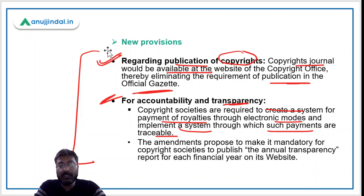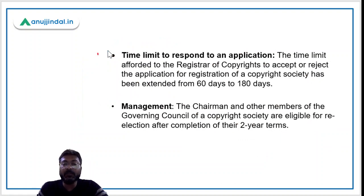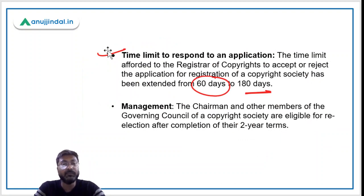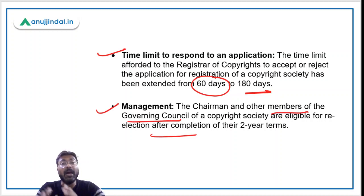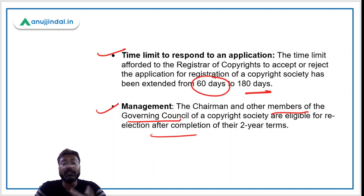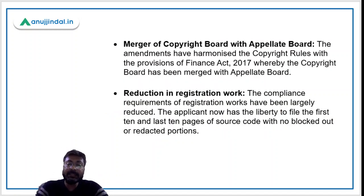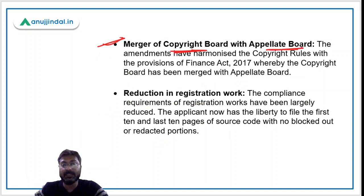The time limit to respond to an application has been increased from 60 days to 180 days. The chairman and other members of the governing council of a copyright society are eligible for re-election after completion of their two-year term. There will also be a merger of the copyright board and the appellate board after the implementation of these amendment rules.